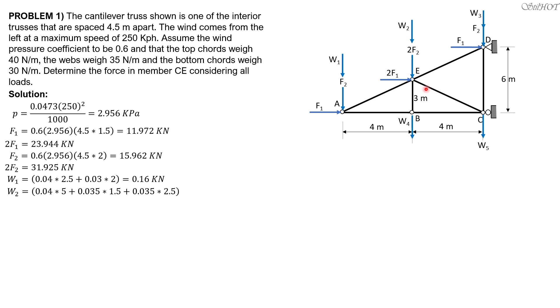0.035 times 1.5, then 0.035 times 2.5 only because the total length is 5, so 0.34. W3, 0.04 times 2.5 plus 0.035 times 3, so 0.205. W4, bottom chord, 0.03 times 4, plus 0.035 times 1.5, so 0.1725. Then W5 is 0.035 times 2.5, plus 0.035 times 3, plus 0.03 times 2, so 0.2525.